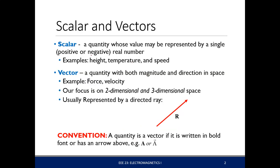First, let's review what are scalars and what are vectors. A scalar is a quantity whose value may only be represented by a single real number — just represented by a magnitude. A single real number could be positive or negative. An example is your height, the temperature of your body or the area, and speed.